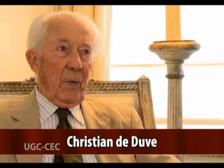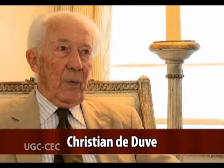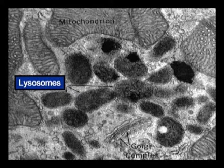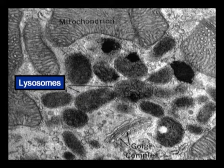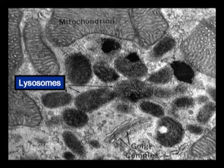Lysosomes were discovered by the Belgian cytologist Christian de Duve in 1955. In their simplest form, lysosomes are visualized as dense spherical vacuoles, but they can display considerable variation in size and shape as a result of differences in the materials that have been taken up for digestion.